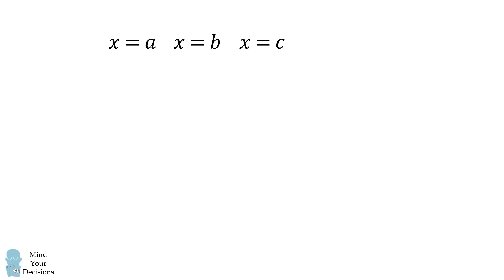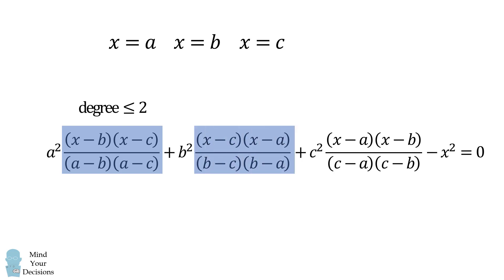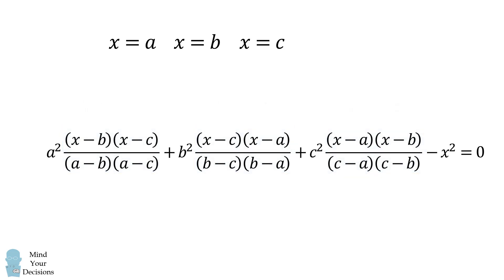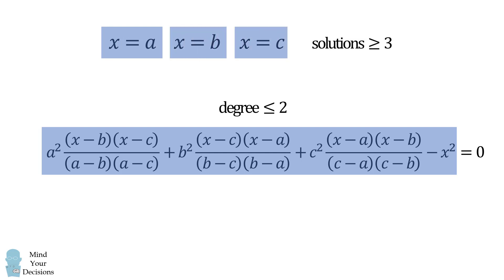So we've found that x equals a, x equals b, and x equals c are three solutions to this equation. Now let's do a little analysis. In each of the first three terms, we have expressions like x minus b times x minus c — polynomials of degree at most two. So putting it all together, this entire equation is a polynomial of degree at most two. However, we've found at least three different solutions, but a polynomial of degree at most two can have at most two roots. So this cannot be a polynomial of degree two or one — it must be identically equal to zero.